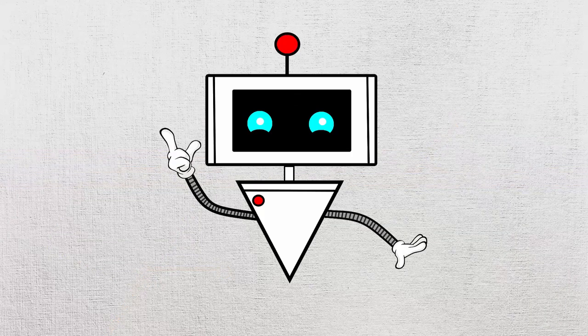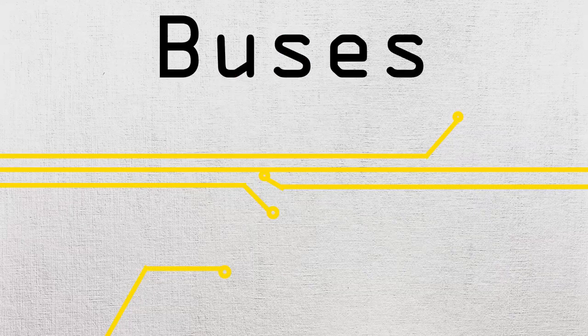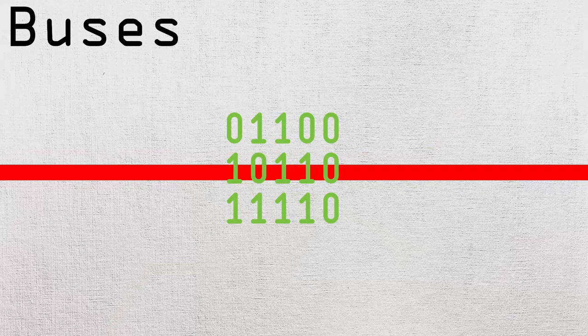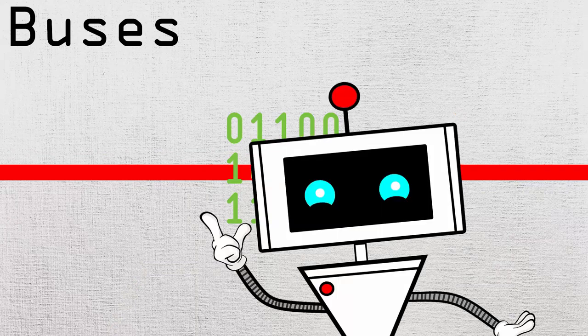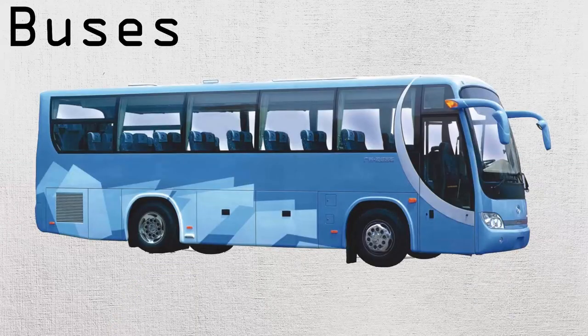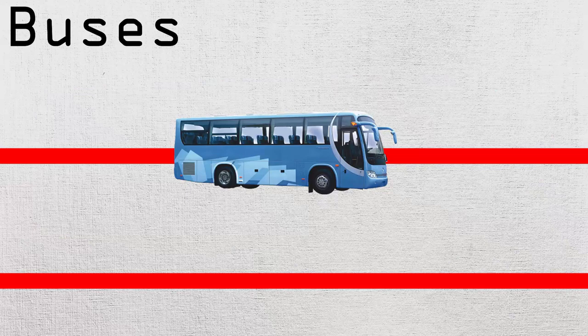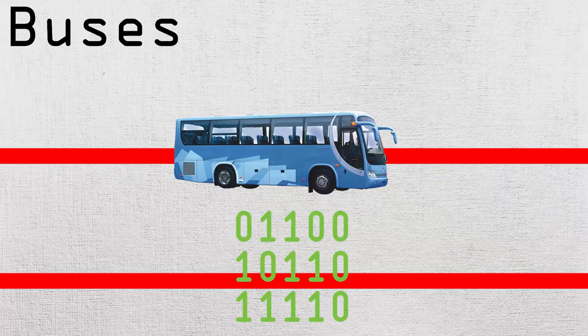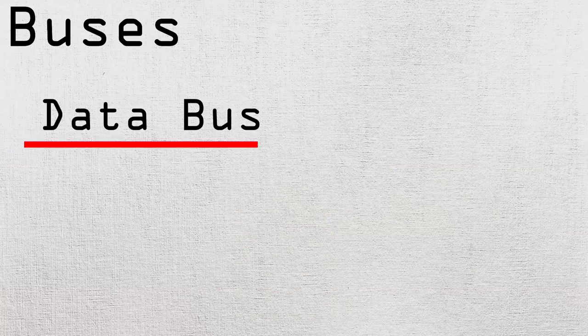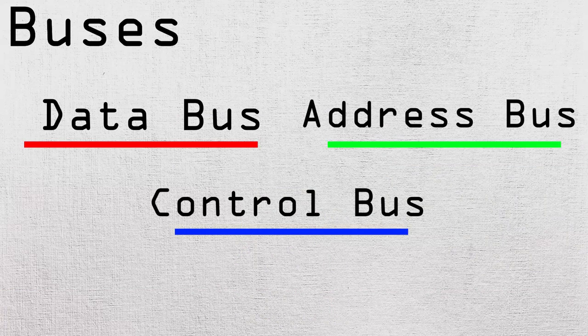Now that we have gone through all the main components of the CPU, we need to know what all this information travels through, and those are buses. Buses are wires through which information travels, and it gets its name from — you guessed it — buses. This is because buses travel in a straight line, and so does the information, hence the name. There are three main types of buses: the data bus, address bus, and the control bus.